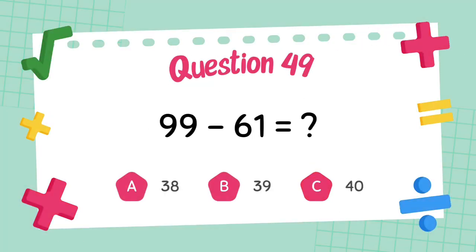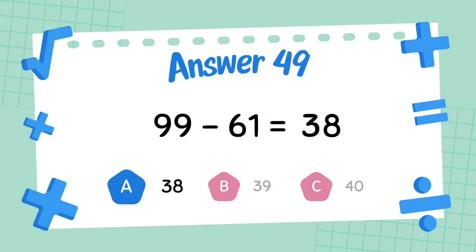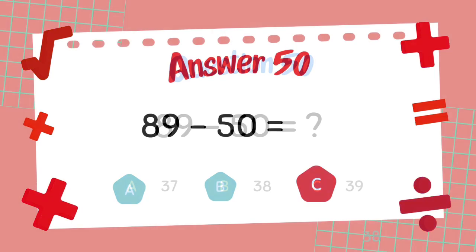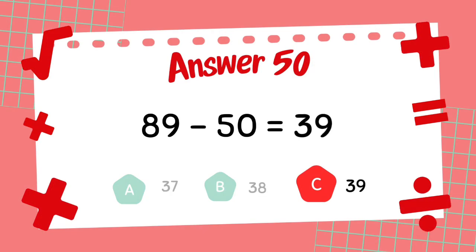What is 99 minus 51? The answer is 38. What is 89 minus 50? The answer is 39.